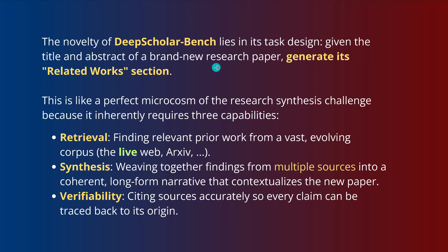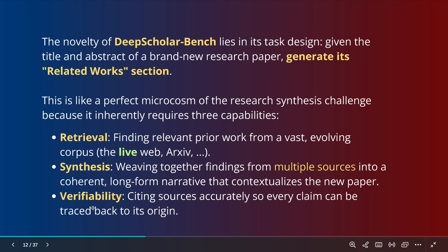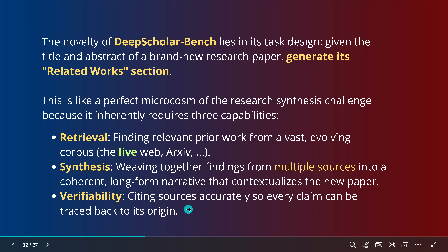So what it needs is three capabilities. First, retrieval — you want to have a vast corpus, the live internet or live arXiv, whatever you have. Then you want a synthesis report — all the data retrieved from multiple sources woven together into a coherent, long-form narrative. And then, the most important constraint: absolute verifiability. Whatever you are claiming and whatever you are citing, those must really exist. The citing sources must be accurate on every claim and must be traced back to its origin. You must have references.